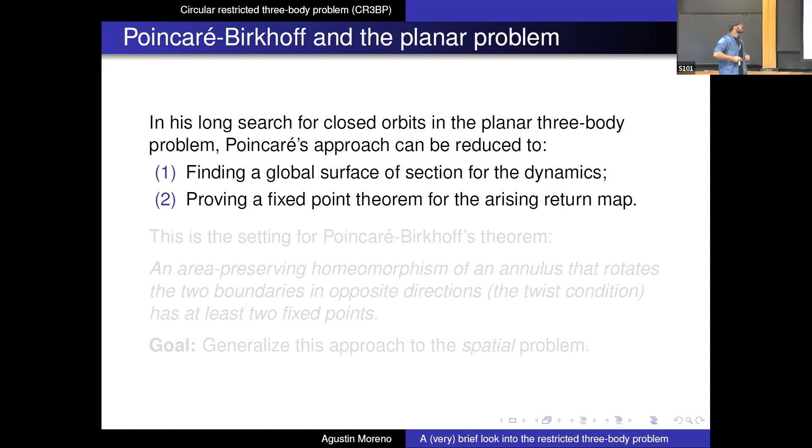So the first step is finding a global surface of action for the dynamics. So this is just some surface in your three manifold where the dynamics is happening with the property that it's bound with a collection of close orbits and such that if you take any point away from this collection of orbits, then its orbit will come and intersect the interior of the surface in the future and in the past in a transverse way.